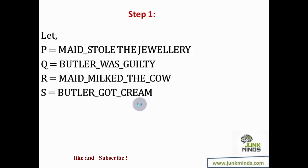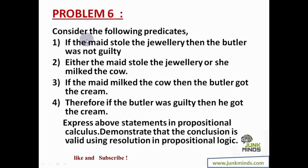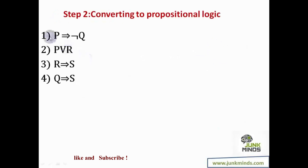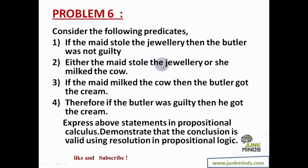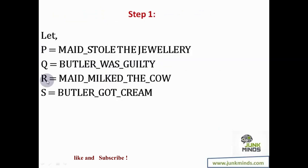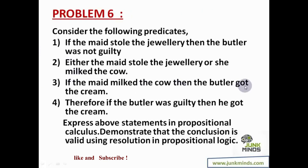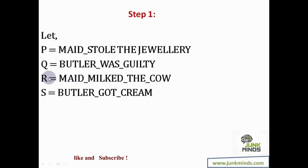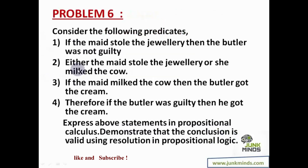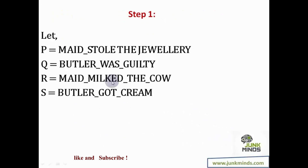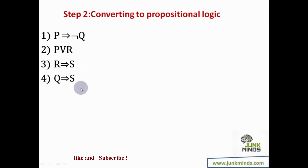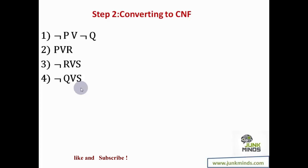Using these variables, representing the information: statement one — if maid stole jewelry then butler was not guilty — becomes p implies not q; statement two — either maid stole jewelry or she milked the cow — becomes p or r; statement three — if maid milked the cow then butler got the cream — becomes r implies s; and the conclusion — if butler was guilty then he got the cream — becomes q implies s. But point four is not information, it is what needs to be proved.